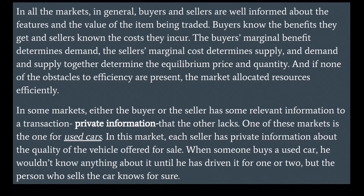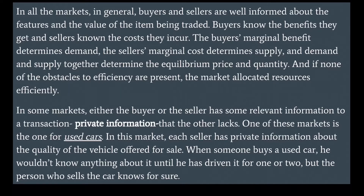When someone buys a used car, he wouldn't know anything about it until he has driven it for a while, but the person who sells the car knows for sure. Private information can be defined as information relevant to a transaction that is possessed by some market participants but not all. Asymmetric information is a situation in which either the buyer or the seller has private information.